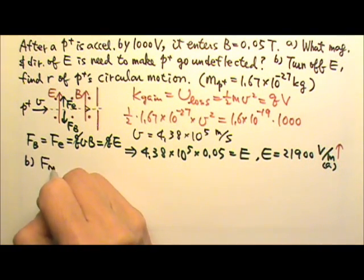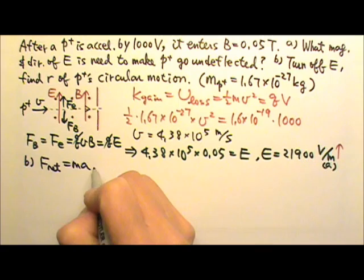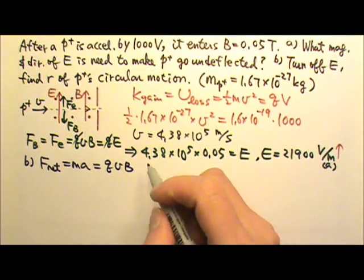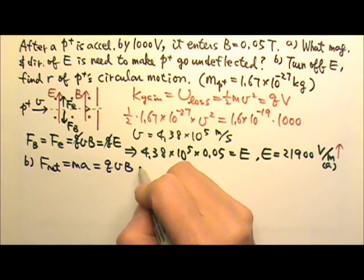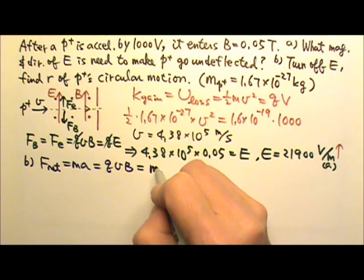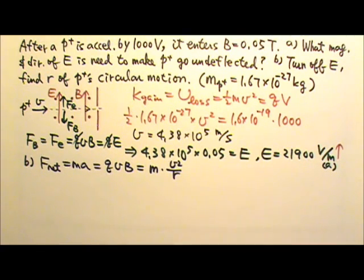So we can write the net force equals MA. The net force is the magnetic force qvB, because the sine is sine 90 degrees, which is 1. And the charge does circular motion, so the A is v² over R.